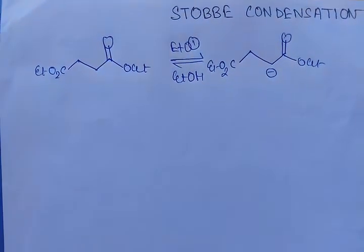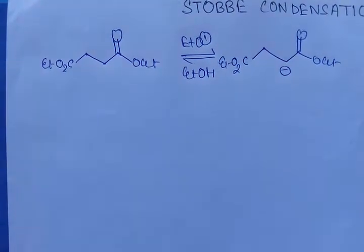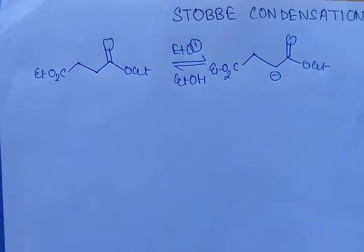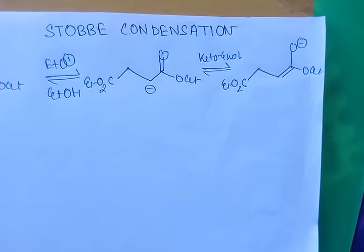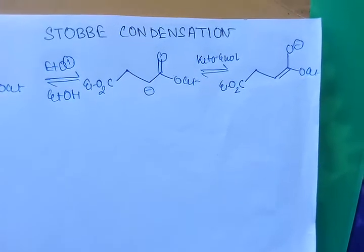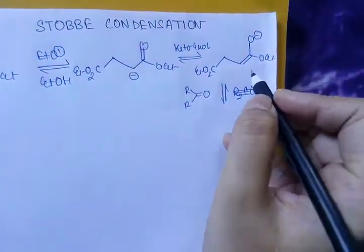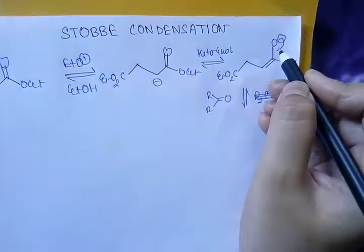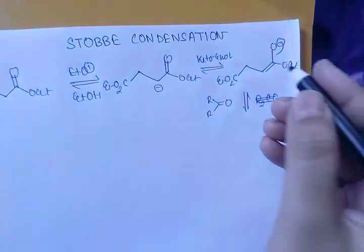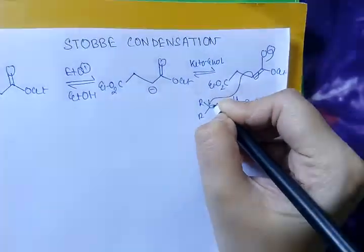Then this ester will undergo to its enol form. Here keto-enol tautomerism occurs. Then the ester reacts through its enol form and attacks the carbonyl carbon of ketone to make a compound.